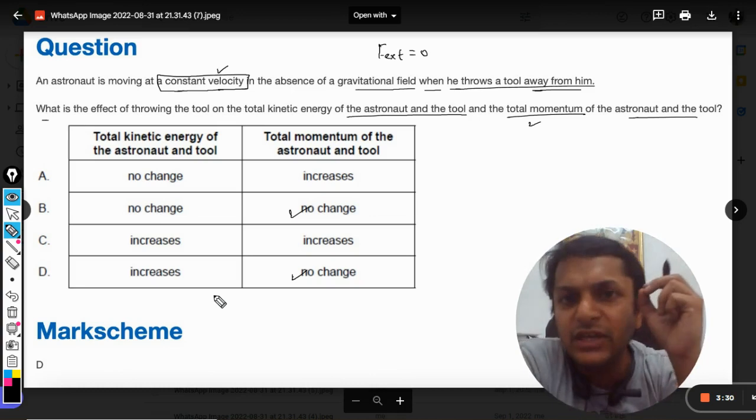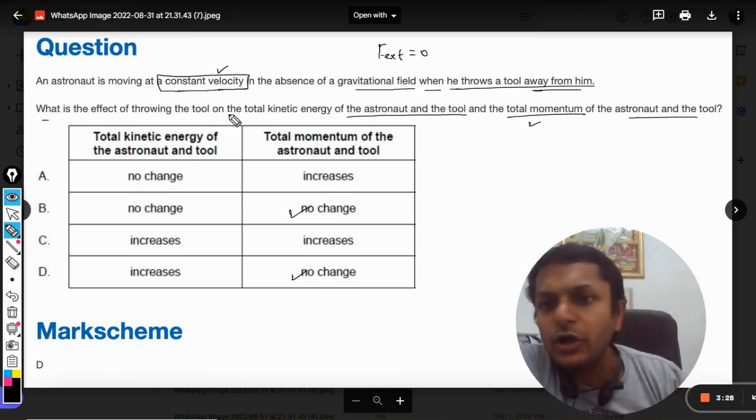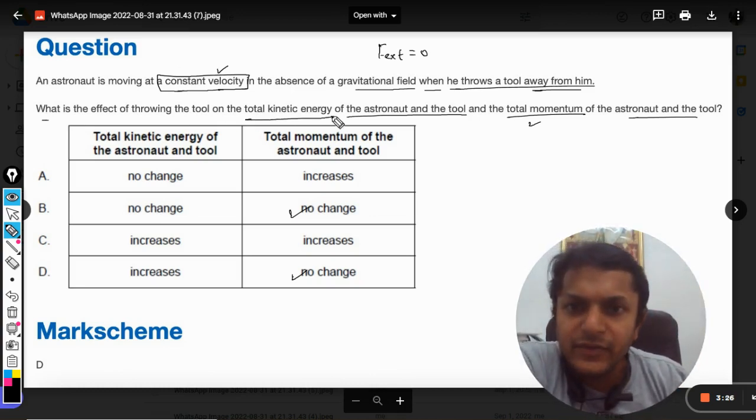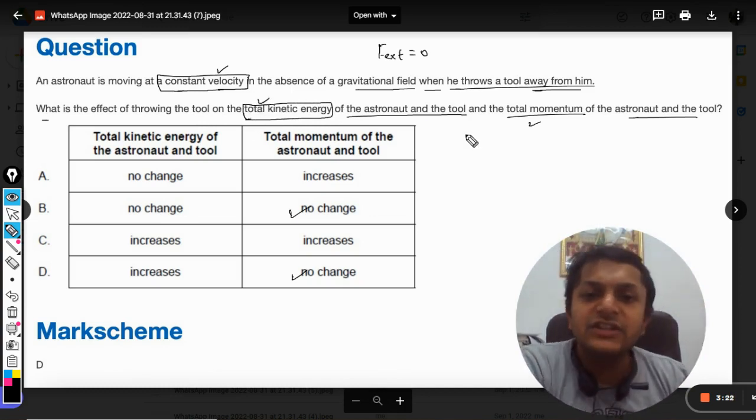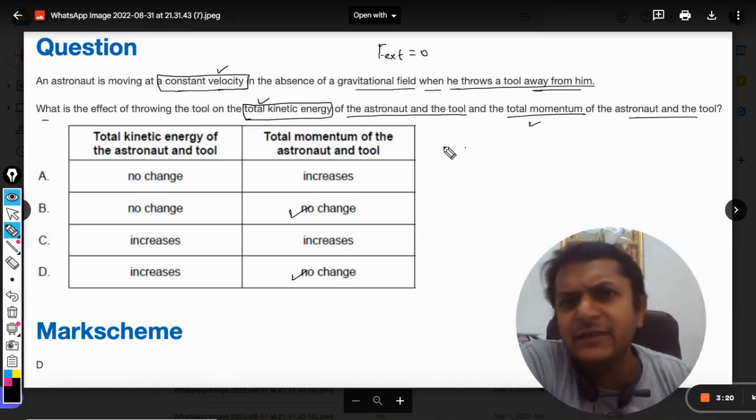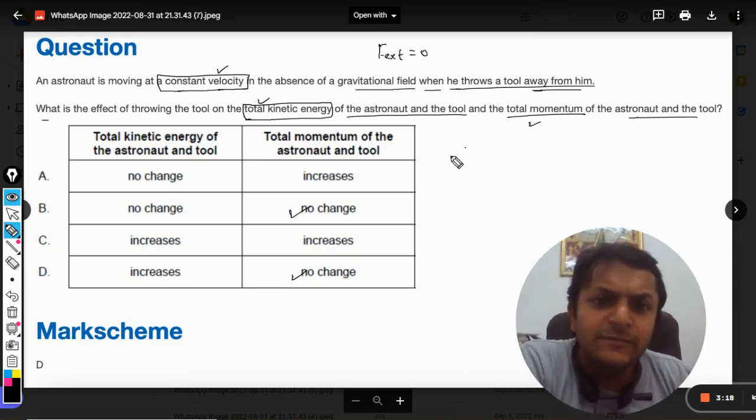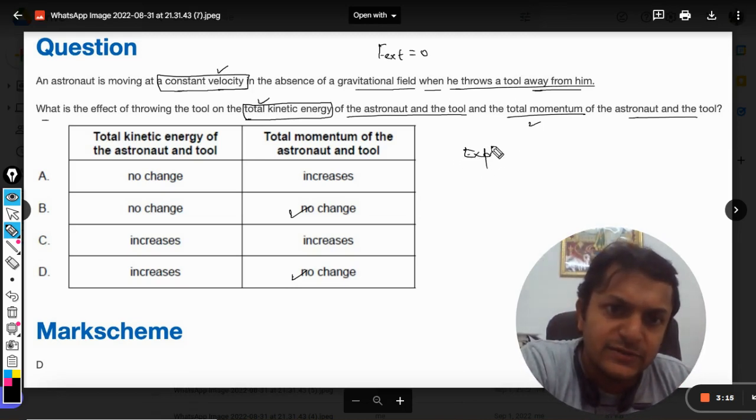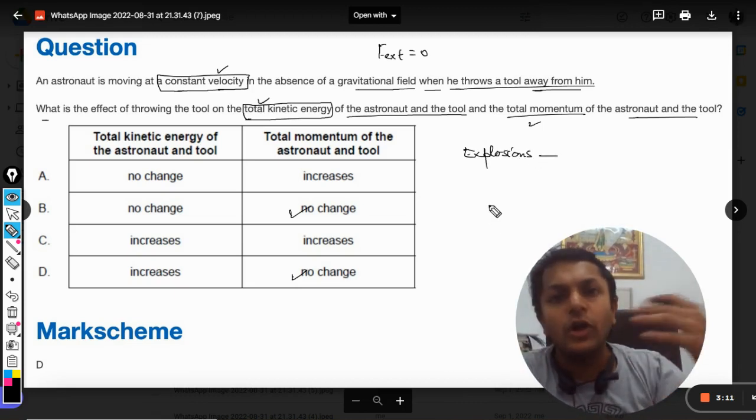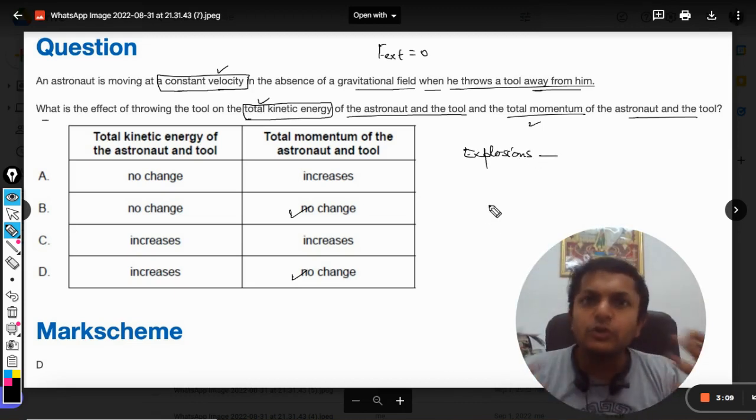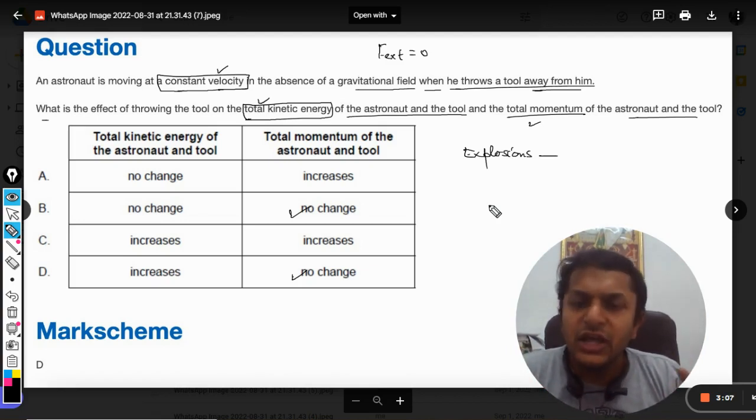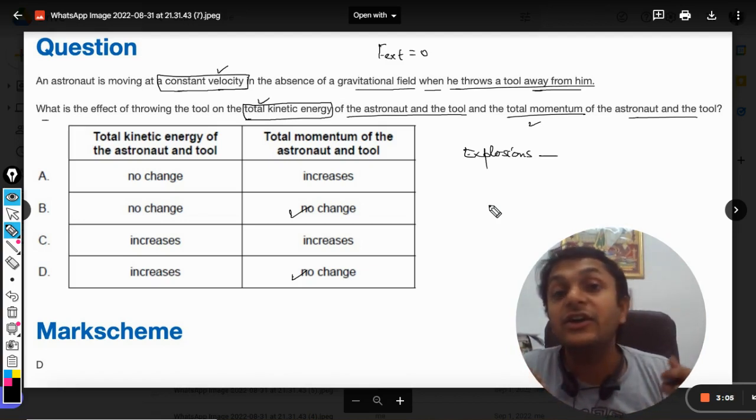So our answer is either B or D. So now we're talking about the kinetic energy. Now here is a twist. See, such kind of things are basically included in the category of explosions. So they are not collisions, but they are explosions. And in explosion, the energy is created.